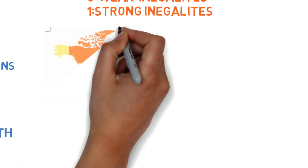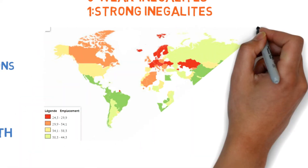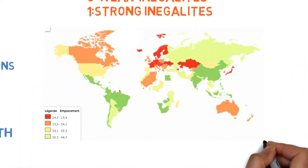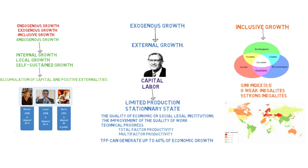The following map from 2018 shows very high inequality in Brazil, China, and India. Almost strong inequalities like the United States, Morocco, and Australia, whose Gini index ranges from 34% to 38%. And finally, reduced inequalities especially in Scandinavian countries such as Sweden, Norway, as well as Germany, Austria, France, and the Netherlands.